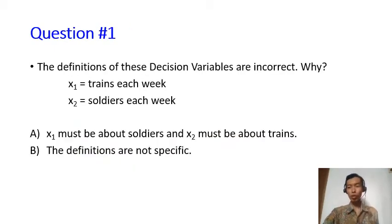For each question here, I would like you to pause the video and think about the answer. I will give the answer after the pause. So the first question: these two definitions of decision variables are incorrect. Why?